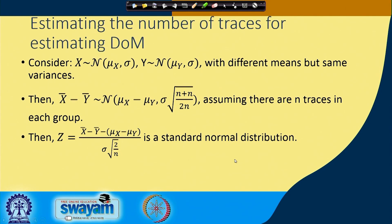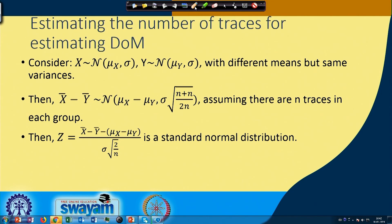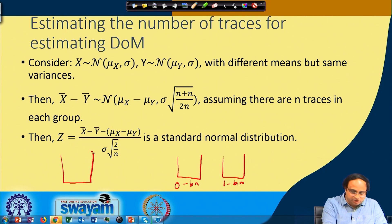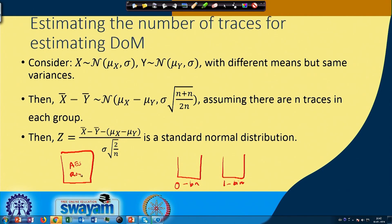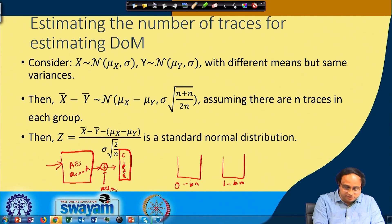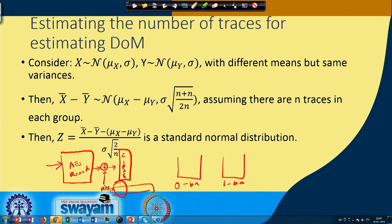We are now set to estimate the number of traces required for the difference of mean attack. We have two distributions: distribution 0 and distribution 1. In our difference of mean attack we have two bins — a 0 bin and a 1 bin. We have an encryption algorithm, say an AES round, and in the final operation we XOR with the 10th round key for AES-128, generating the corresponding cipher. As an attacker, you guess only a portion of this key and target the last round S-box.